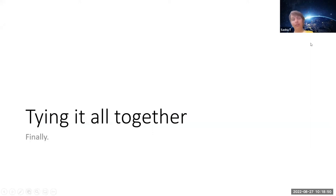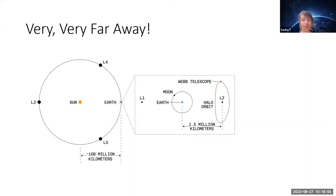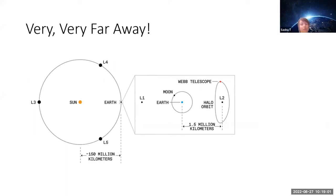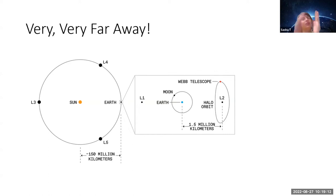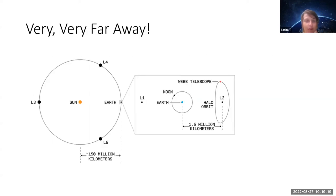James Webb is much farther away than even geosynchronous orbit. It's actually orbiting around Lagrange point 2, where the gravity of the Earth-Sun system balances out, allowing the telescope to orbit that point. There's a lot of complicated physics involved. So how do we track where it is?